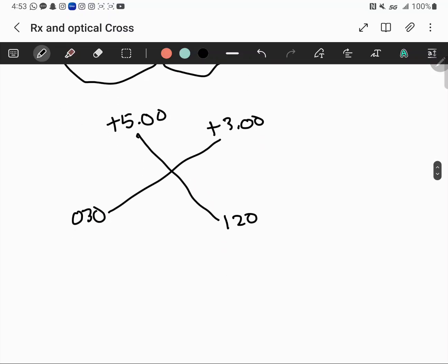Pick the most positive or least negative, so I'll pick plus 5. Choose the axis it's on, axis 120. The difference between these, so plus 3 minus plus 5, gives me minus 2.